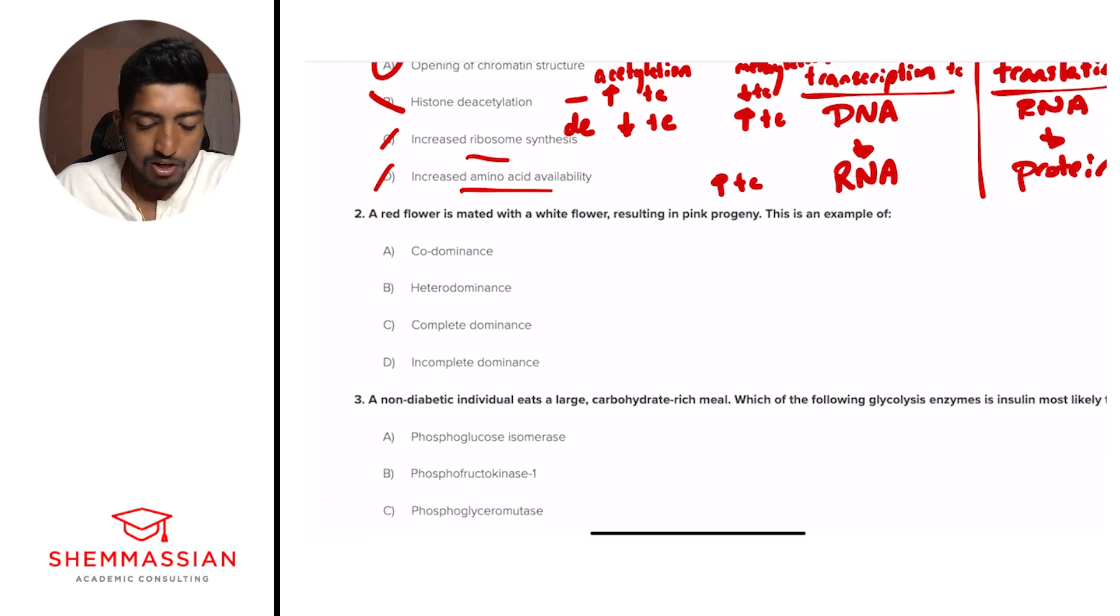A red flower is mated with a white flower, resulting in pink progeny. This is an example of A, co-dominance, B, heterodominance, C, complete dominance, or D, incomplete dominance. All right, so a genetics question dealing with types of heritability. Right away, we should know these types of heritability off the top of our head very, very strongly.